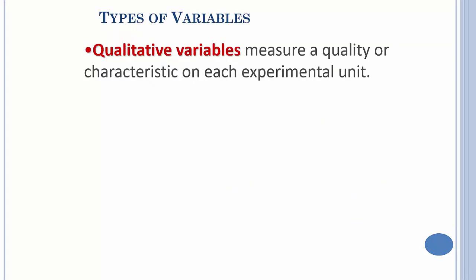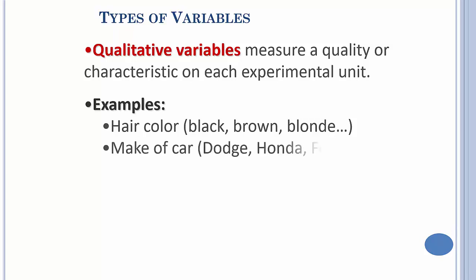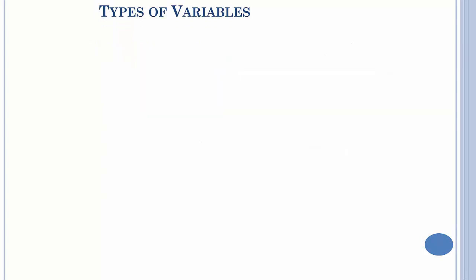So the true definition: qualitative variables measure a quality or characteristic. Some simple examples: hair color, type of car, gender, the state you were born in.